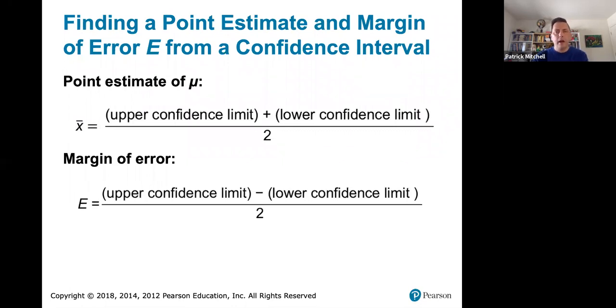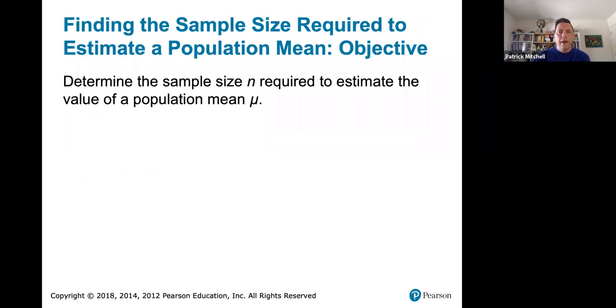We did something almost identical to this in section 7.1. If you're given the confidence interval and you want to find the point estimate and the margin of error from the confidence interval, you do that the same way that we did in 7.1. The point estimate, which this time is x bar, is going to be the average of the upper and lower confidence limits. The margin of error, just like in 7.1, is going to be the range, or the length of the confidence interval, the upper limit minus the lower limit divided by two. This is the distance from the middle of the interval to one of the limits.